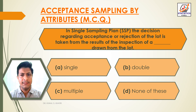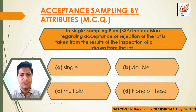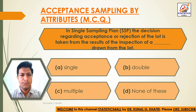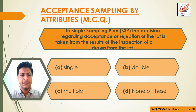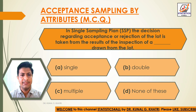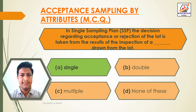Question 9: In a single sampling plan, the decision regarding acceptance or rejection of the lot is taken from the results of the inspection of a single sample drawn from the lot. The answer is Option A — a single sample.